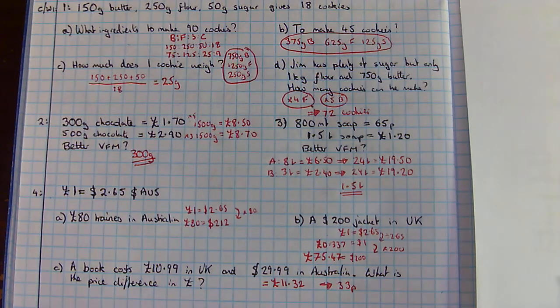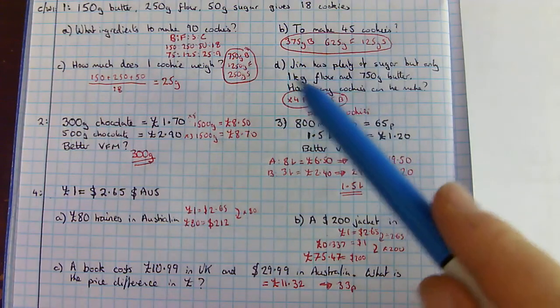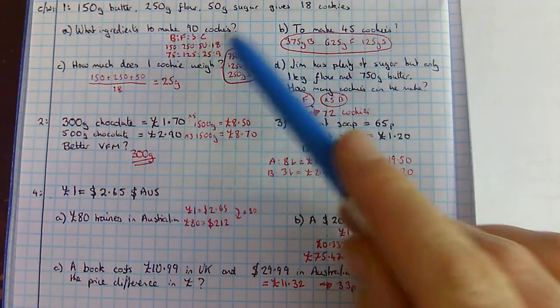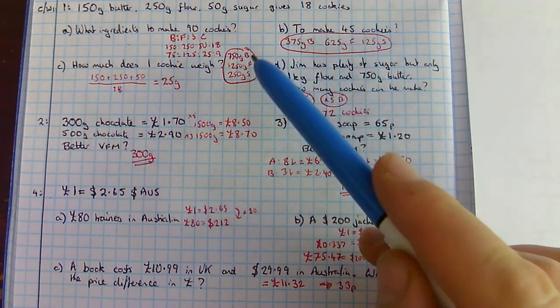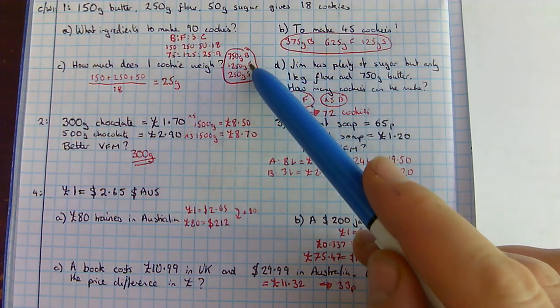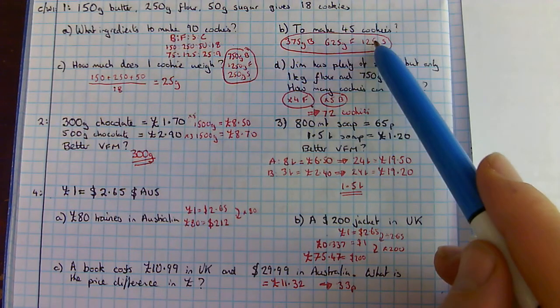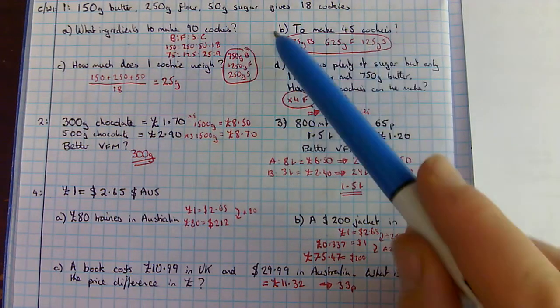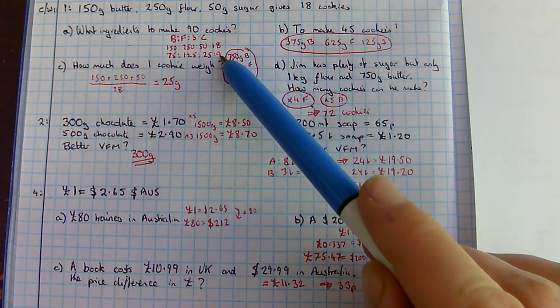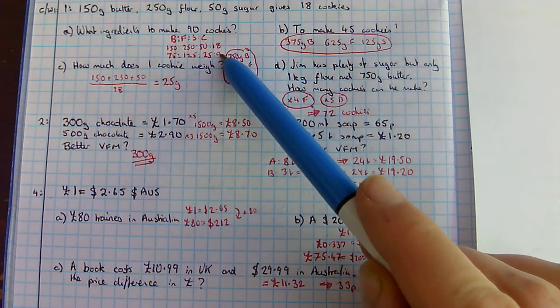For the first question, here we're trying to make 90 cookies. So, we're timesing everything by 5, gives you 750 grams, 1250 grams, and 250 grams. A bit more difficult when you're trying to make 45 cookies. You're going to halve all of your quantities to give you 9 cookies. And then times that by 5, which is 375, 625, or 125.